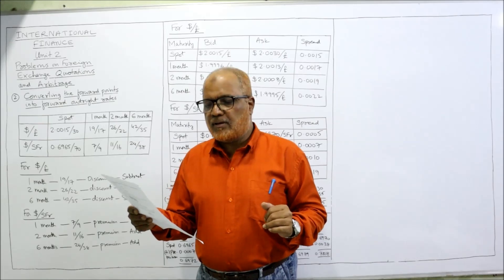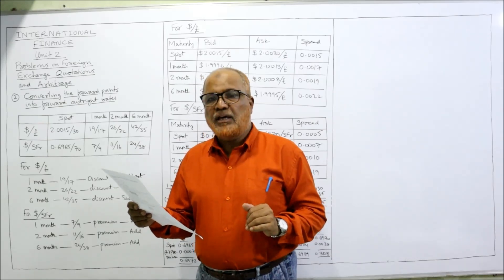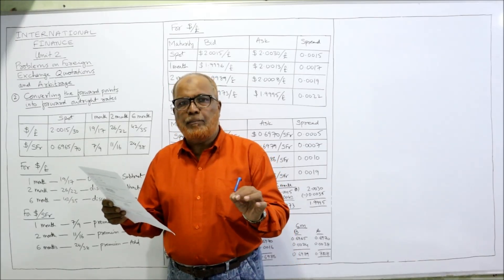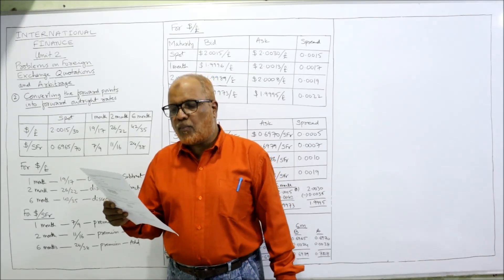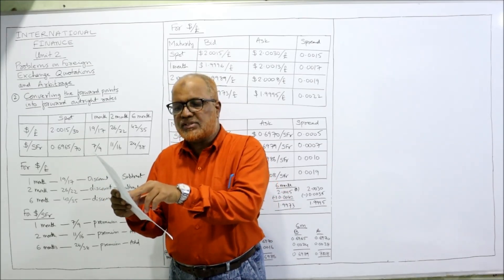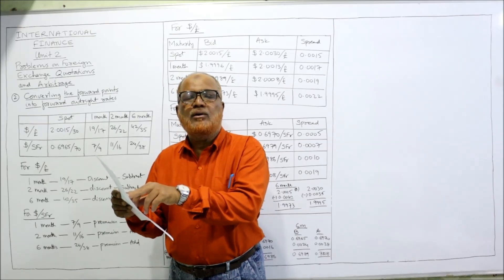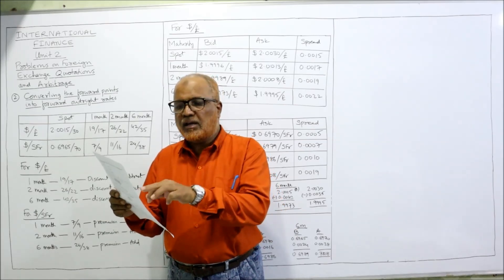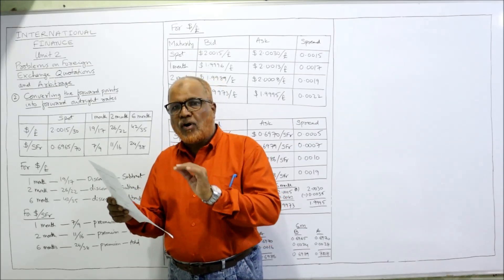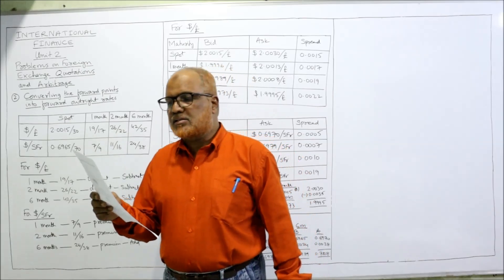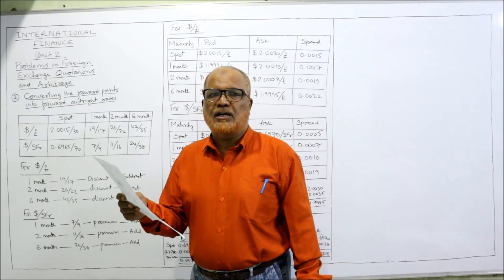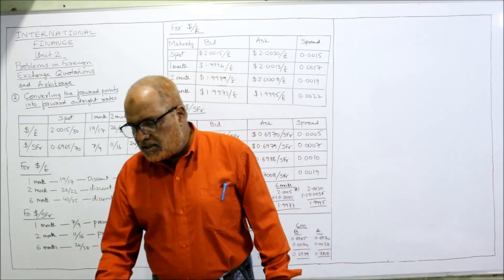For dollar per SFR, the spot bid rate is 0.6965 and the ask rate is 0.6970. For the forward points: one month is 7/9, two months is 11/16, and six months is 24/38.